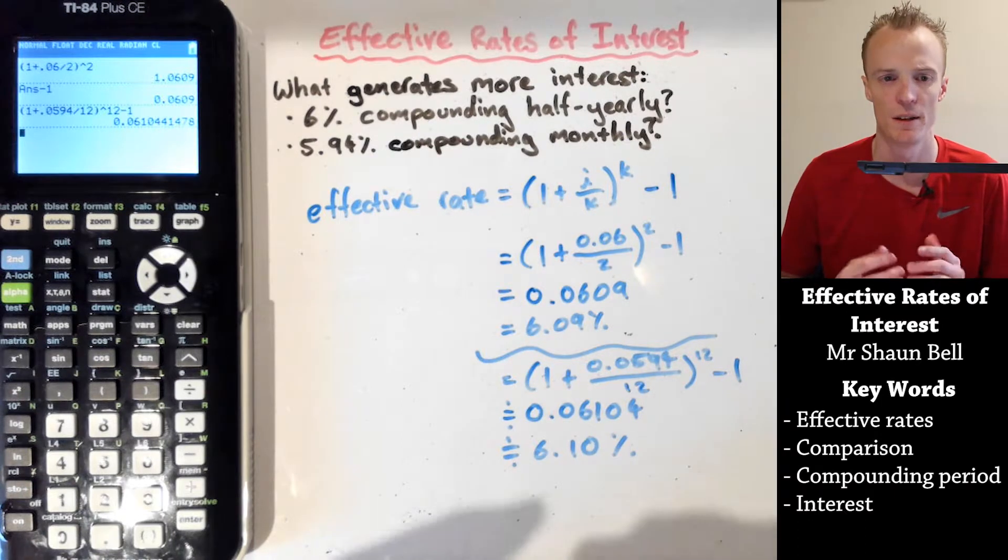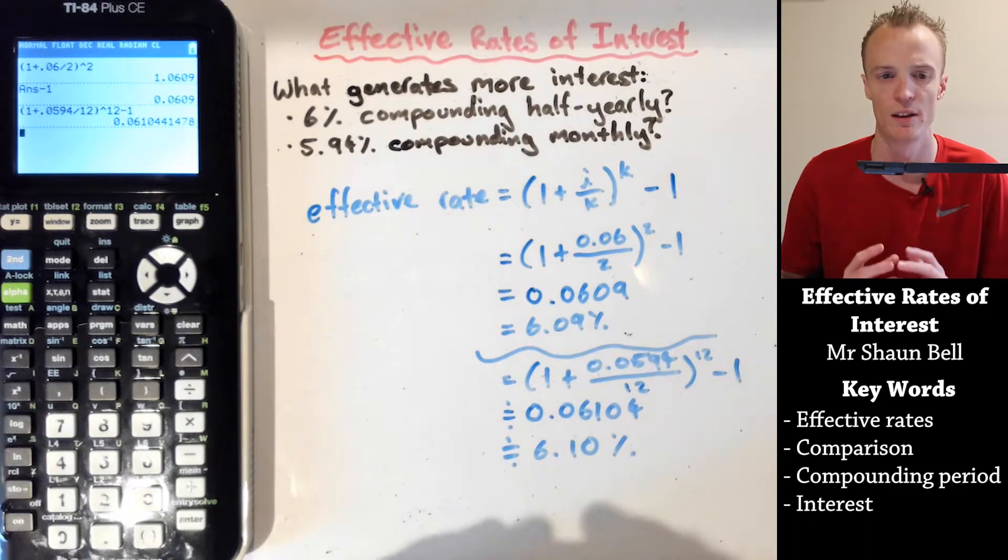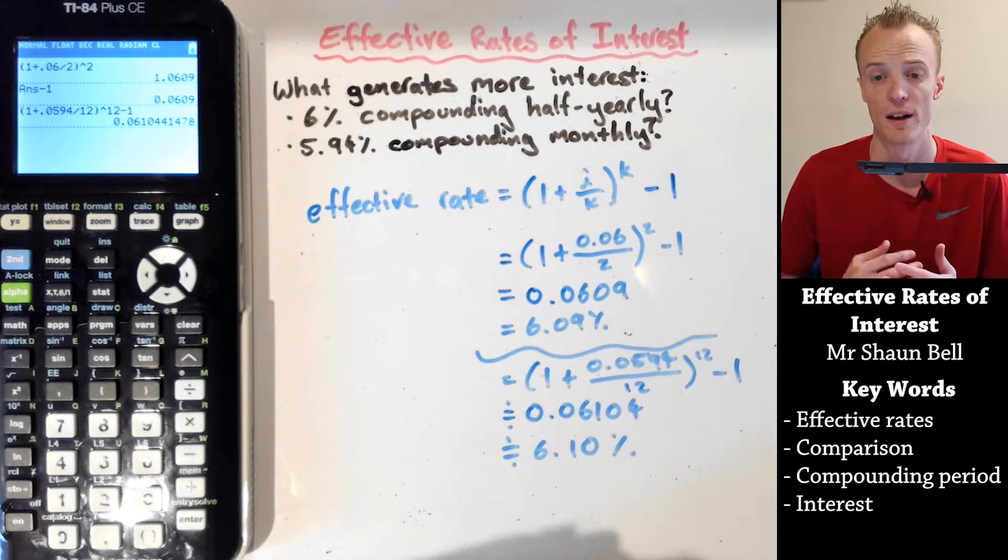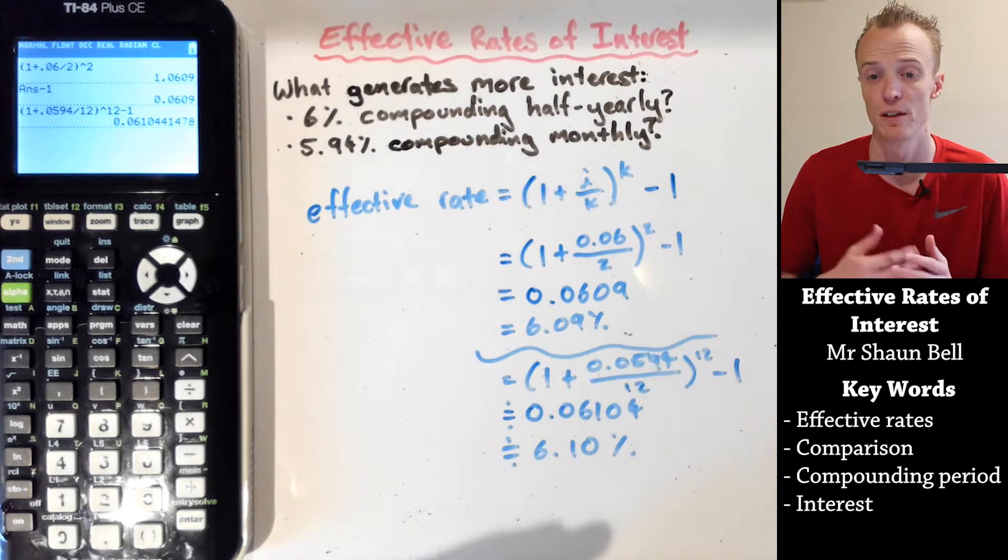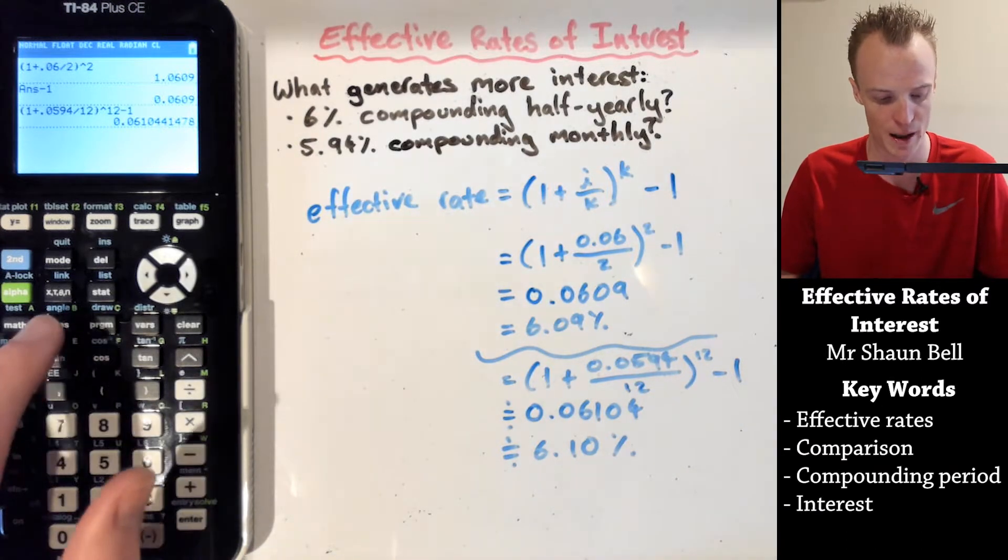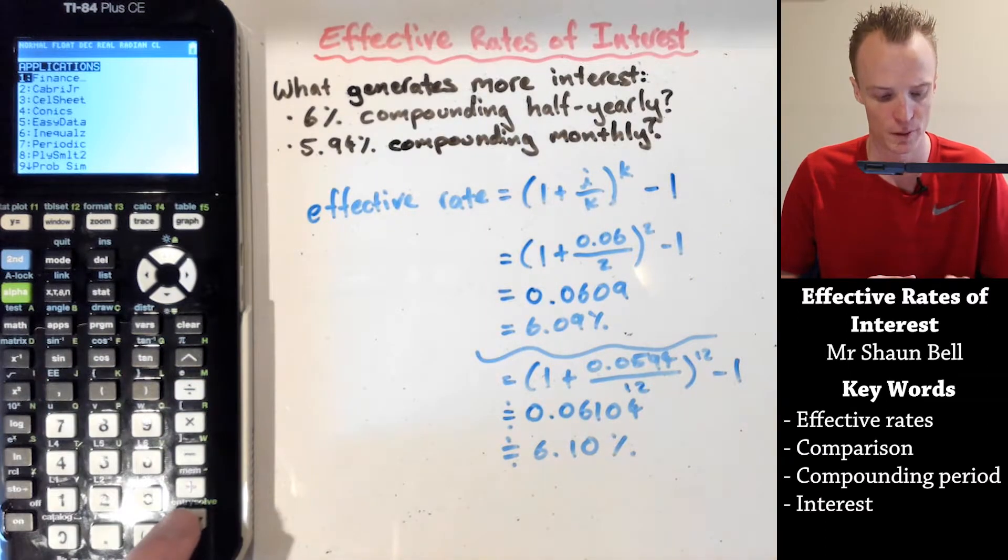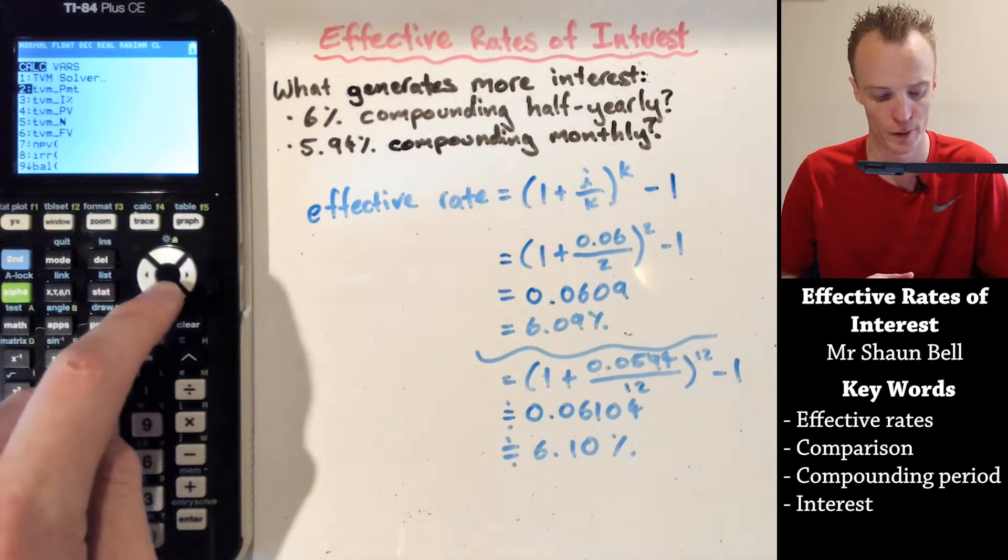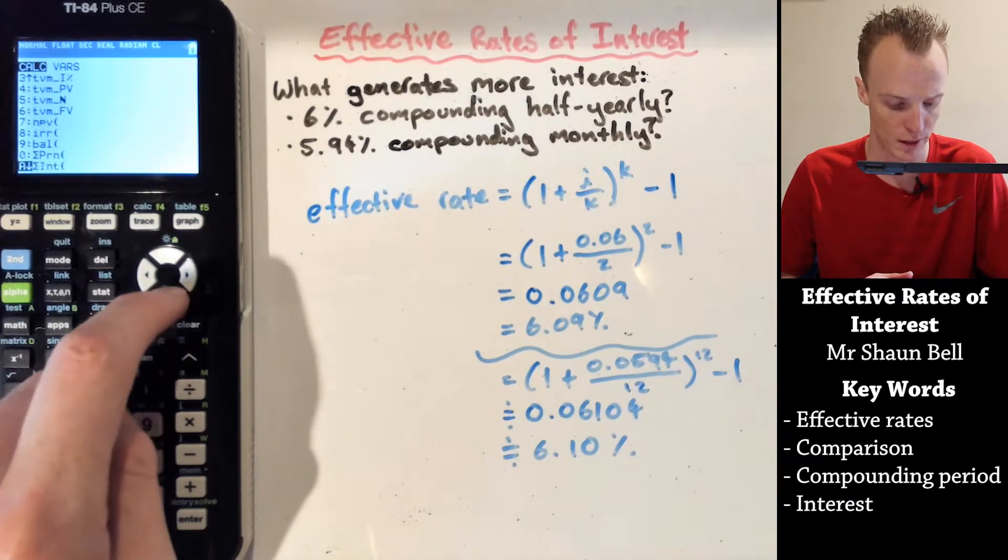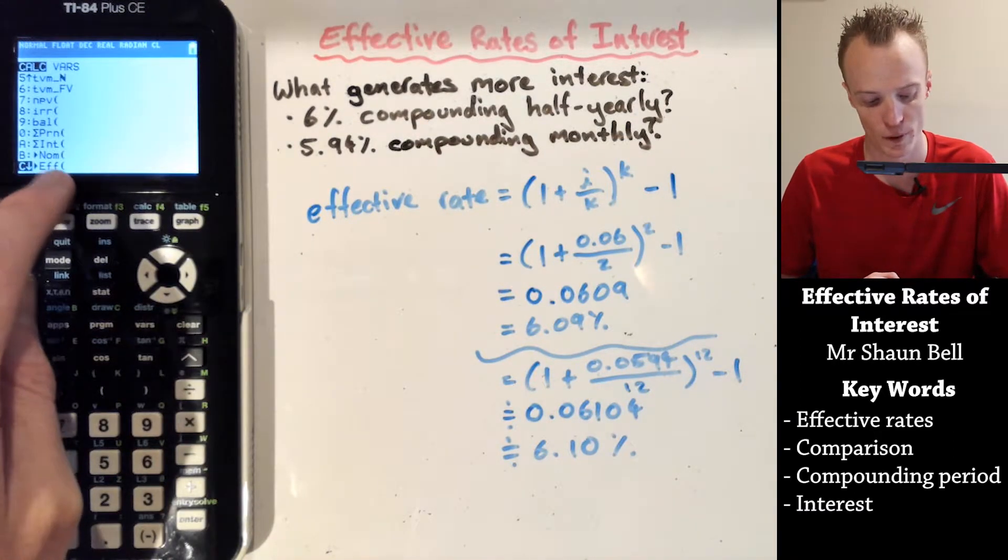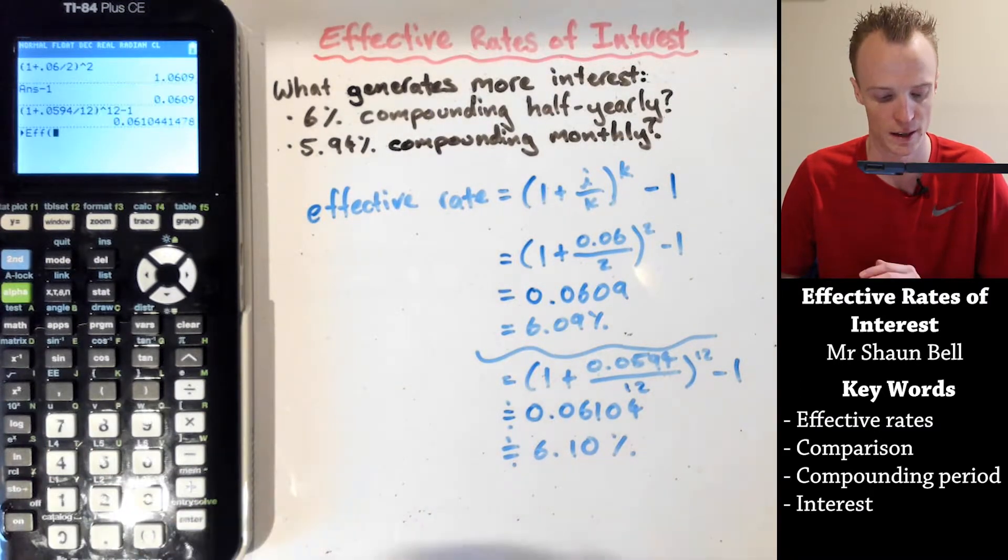But there is something within this calculator here that can automatically calculate this for us. And we only need to know the interest rate and the number of times it compounds per year. To do that, we need to go into our apps function. We want to go into our finance function. Now there's something off the screen here. So if we scroll down until we get to the C option, we'll find something called effective with a bracket.